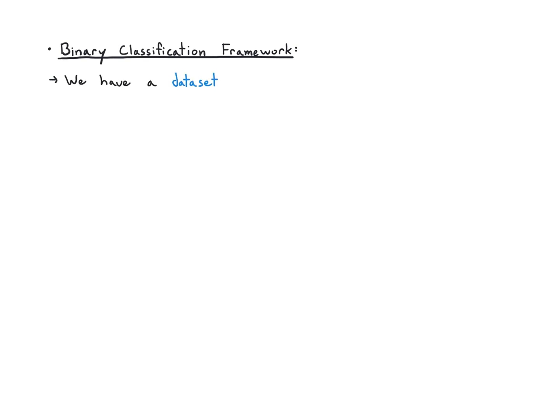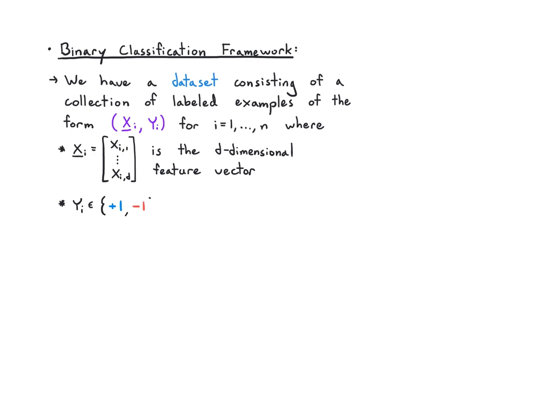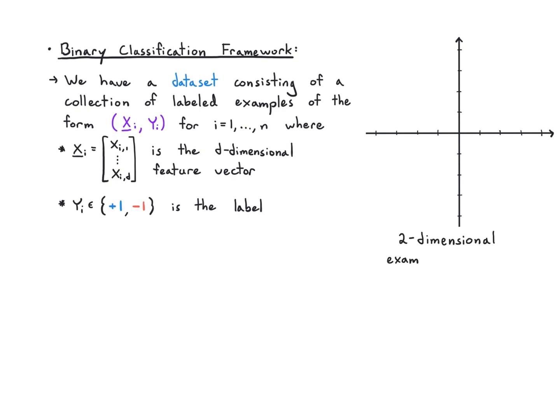Here's the basic framework for binary classification with a few simple ingredients and slightly different notation. We have a dataset consisting of labeled examples of the form (x_vector_i, y_i) for i from 1 to n. x_vector is the d-dimensional feature vector and y is either +1 or −1, the label. The departure from previous notation is that before we predicted 0 or 1, but now we have x_vector trying to predict plus or minus.